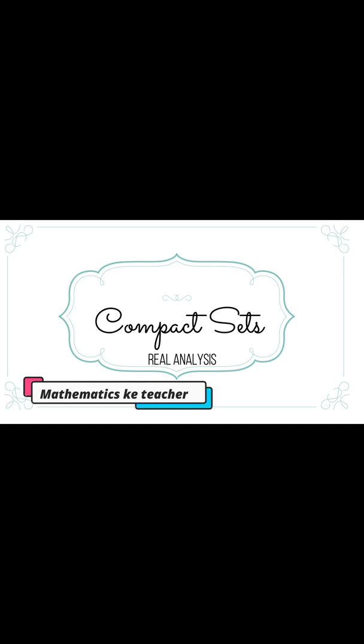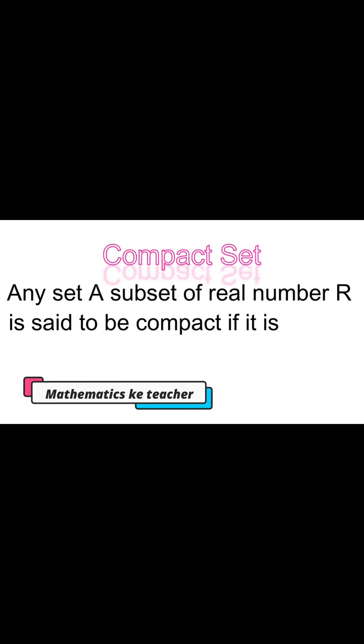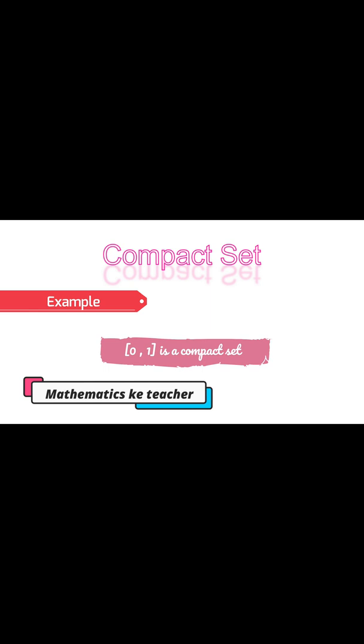Compact Sets. Any set A, subset of real number R, is said to be compact if it is closed and bounded. The closed interval from 0 to 1 is a compact set.